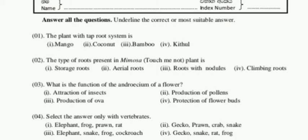That's why we can say the taproot is present in mango, making the first answer suitable for question one. Coconut, bamboo, and kithul are all monocotyledon plants, so taproot is not present in them. Let's move to the next question.